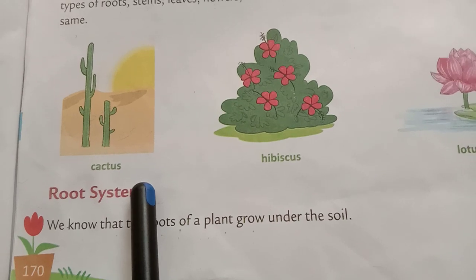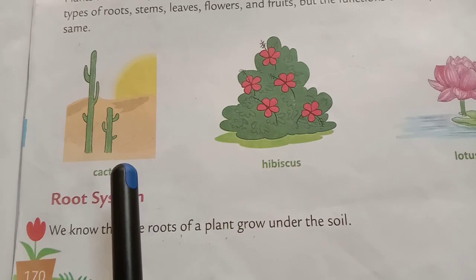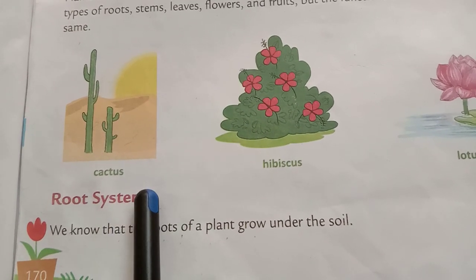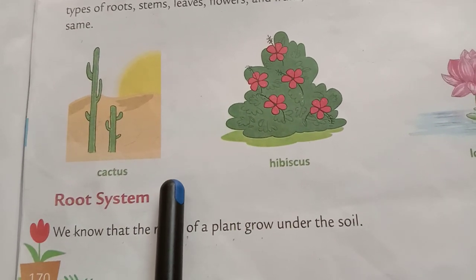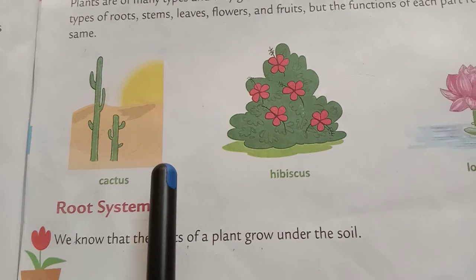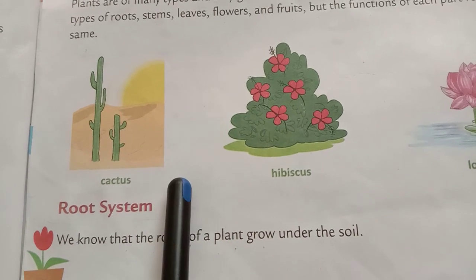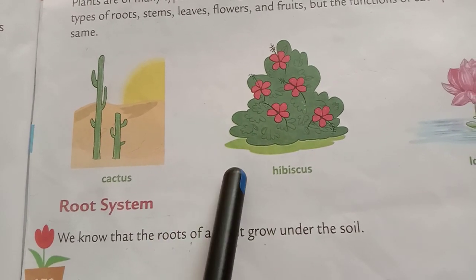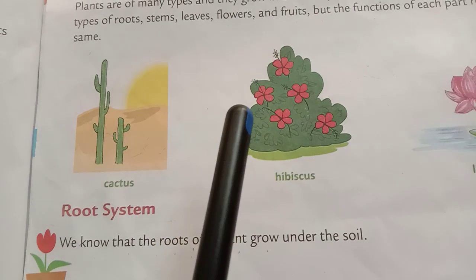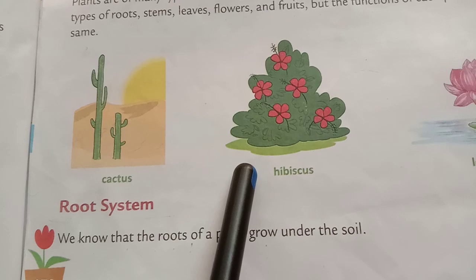Plants are divided into two systems. The first is the root system and the second is the shoot system.